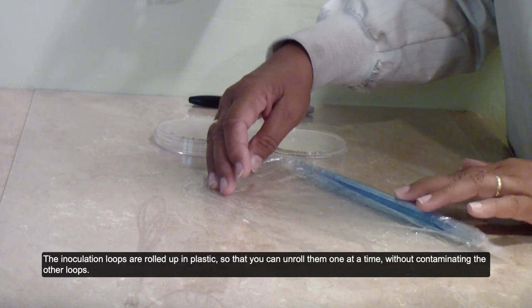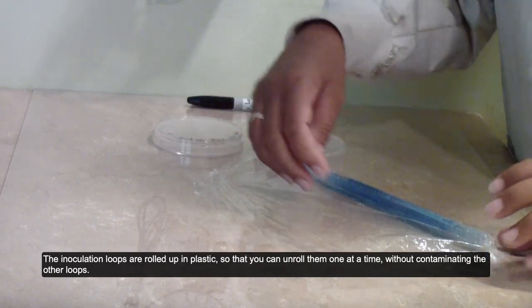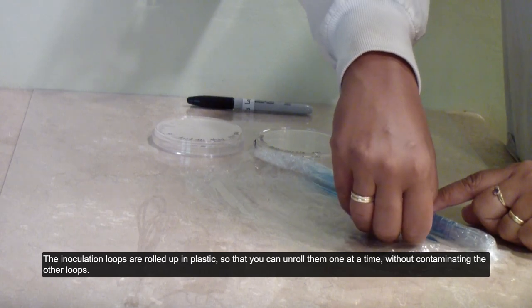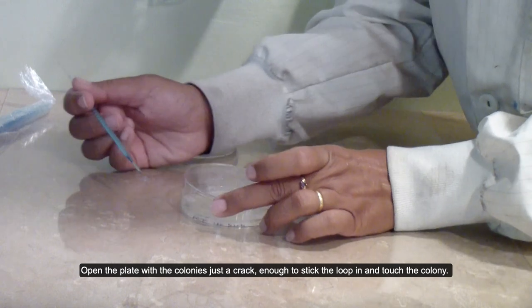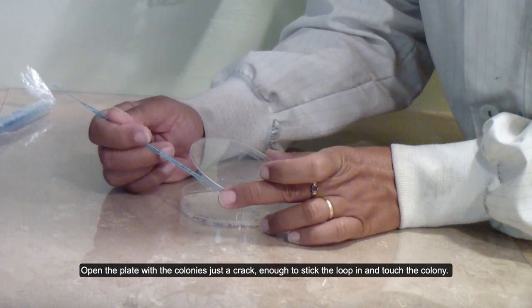The inoculation loops are rolled up in plastic so that you can unroll them one at a time without contaminating the other loops. Open the plate with the colonies just a crack, enough to stick the loop in and touch the colony.